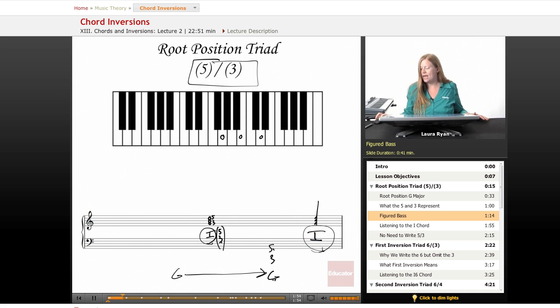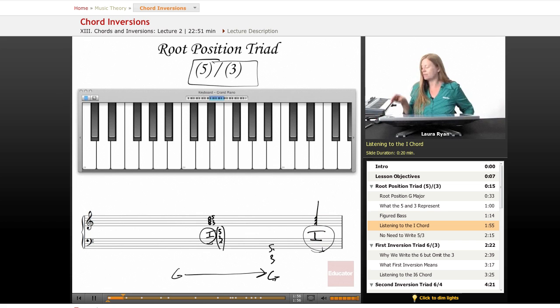So let's play the one chord in the key of G. Here we go. Root position. From the first note to the third note, one, two, three. From the first note to the fifth note, one, two, three, four, five. Root position.